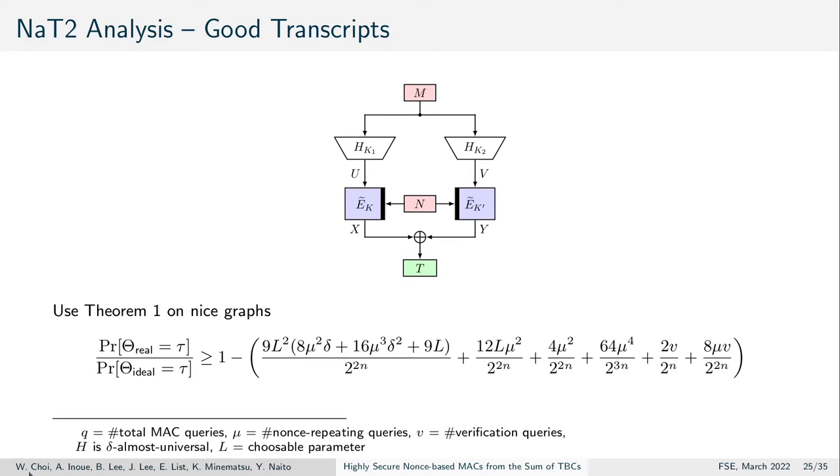For good transcripts, we can now use theorem 1 on the ratio of the probability to ideal nice transcript graphs. The proof details are a little involved and we refer the interested reader to the details in our paper.